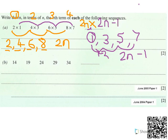So my rule for this sequence is two n times two n minus one. Slightly more complicated, but it's two sequences put together.